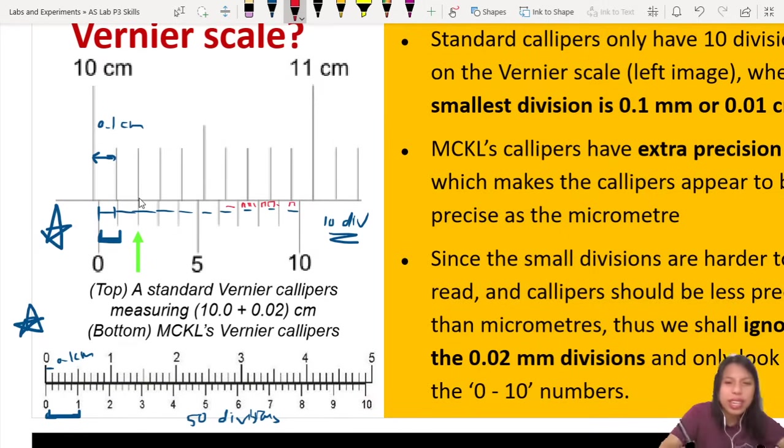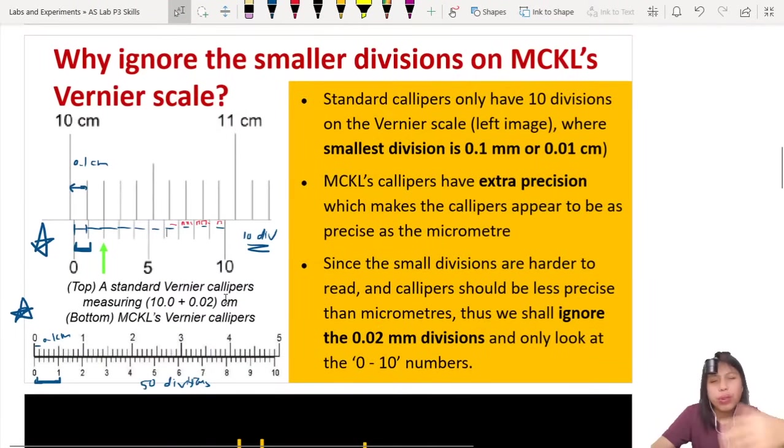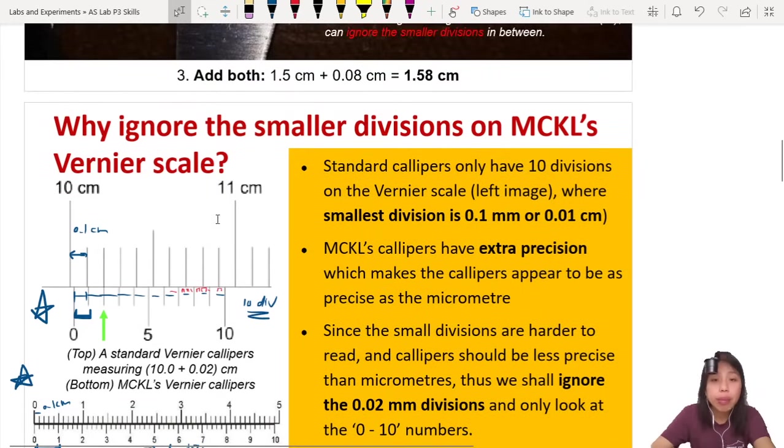Very extra. No need. Okay, no need. So, that's the whole idea. You can ignore for MCKL scales, you can ignore the in-betweens. If you really want to take the small ones, it's hard to ignore it. Okay? So, that's why we can ignore that part.